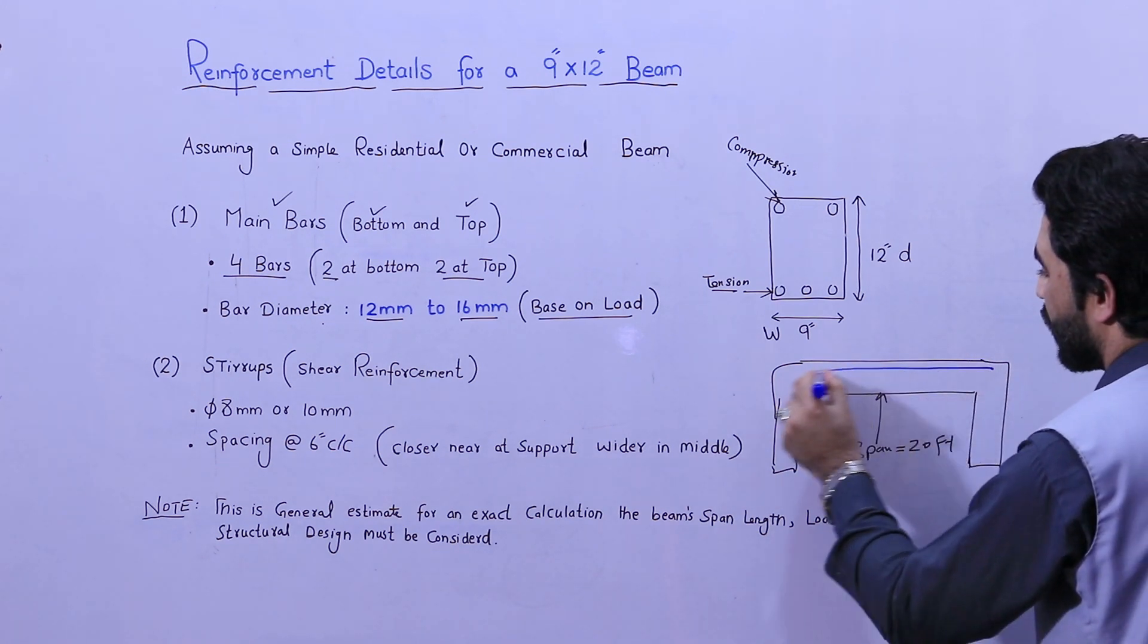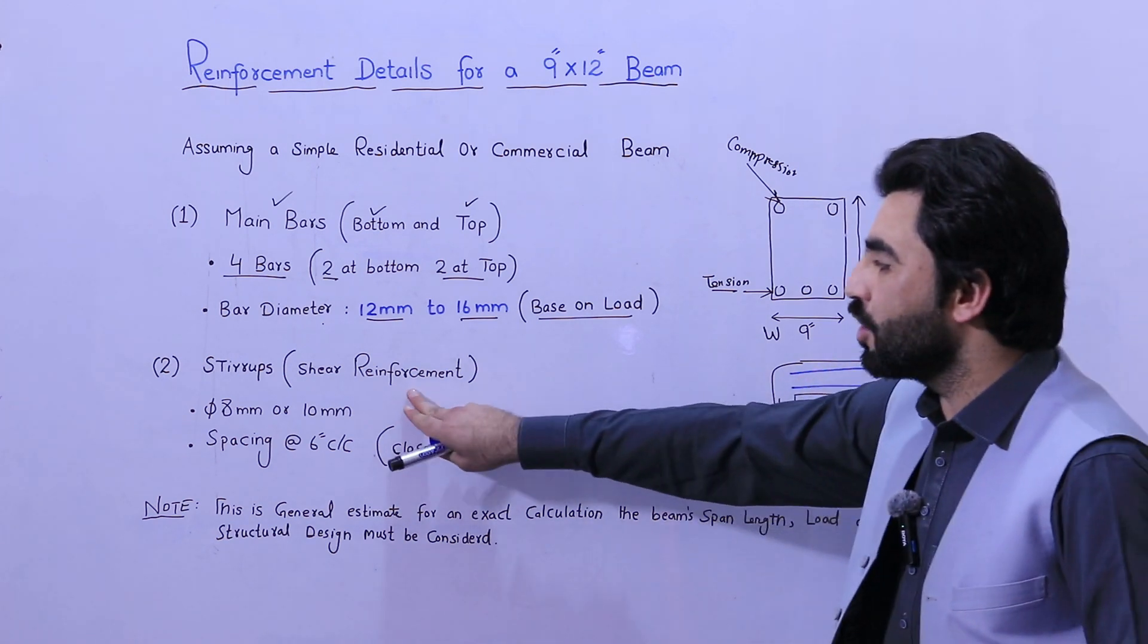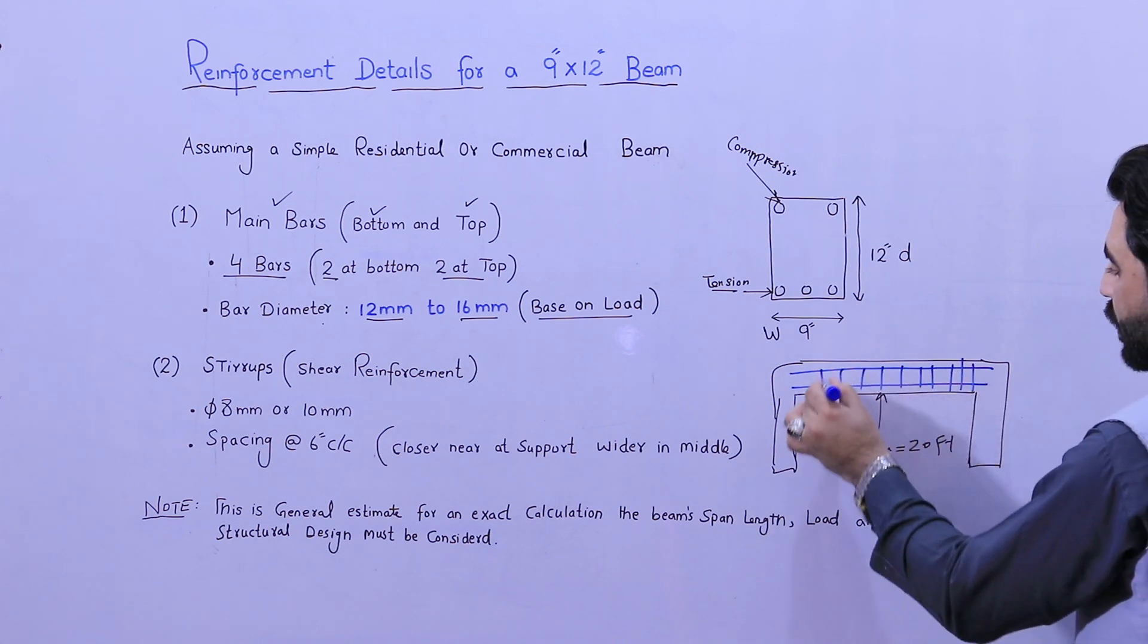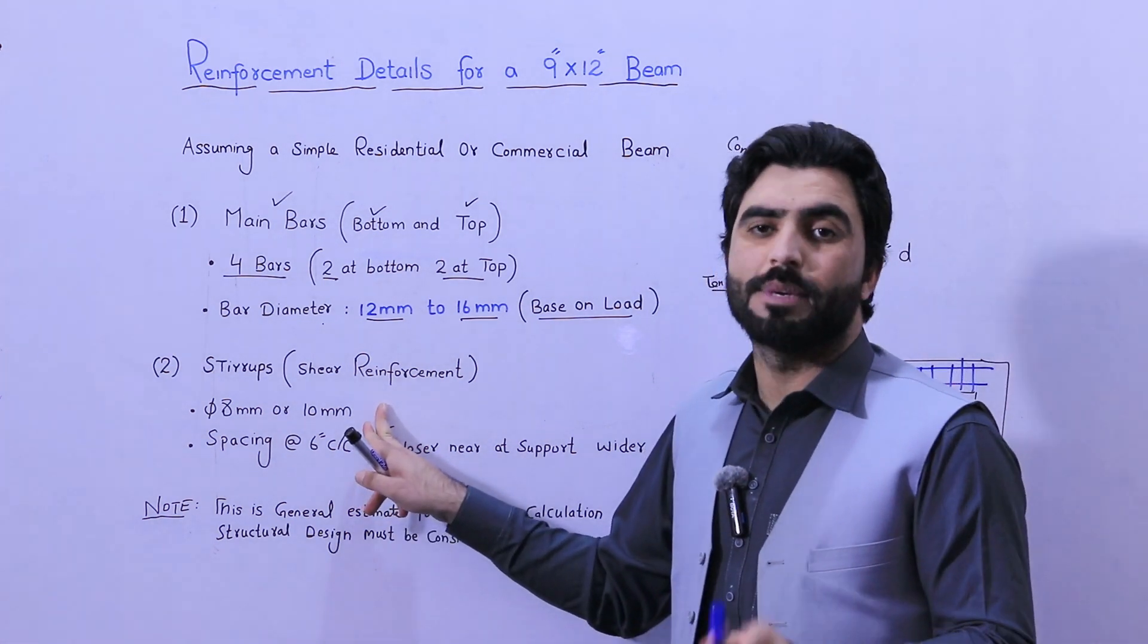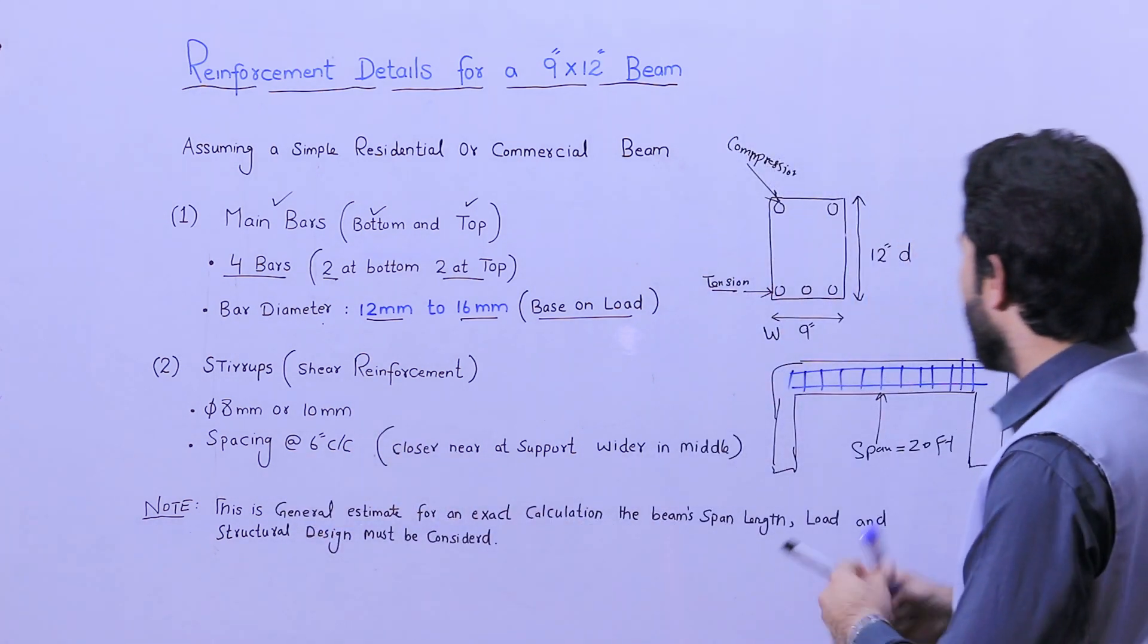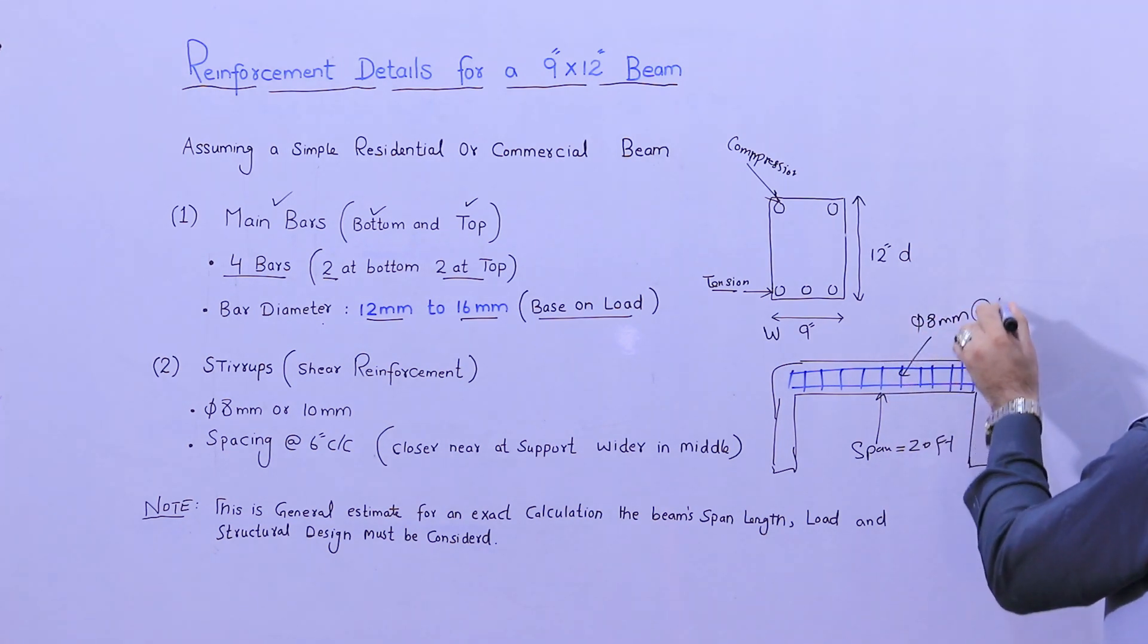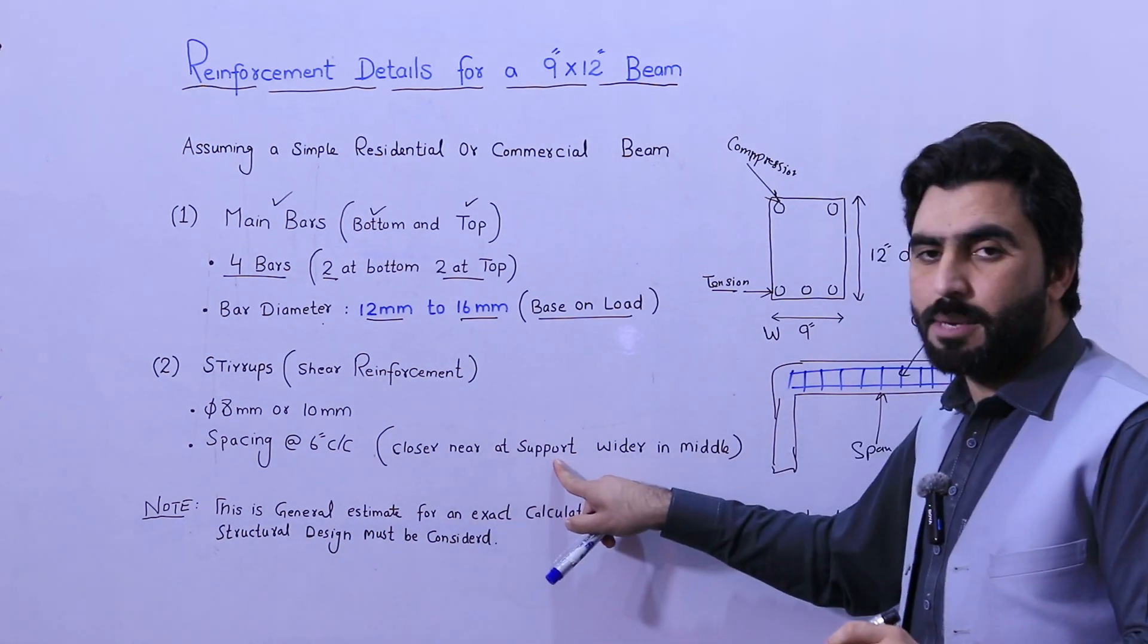Now stirrups are called shear reinforcement. You can see these are shear reinforcement stirrups. Use eight millimeter or ten millimeter for the stirrup diameter. Next, spacing should be six inches center to center. I recommend eight millimeter with the spacing of six inches center to center.